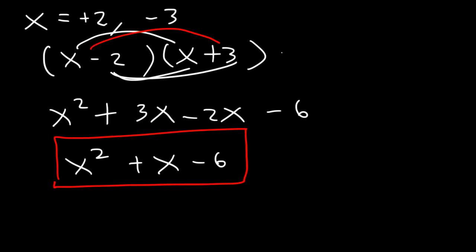So this is the quadratic equation: x squared plus x minus 6, and we should have an equals zero. Try this one.